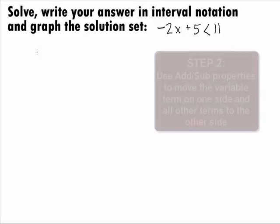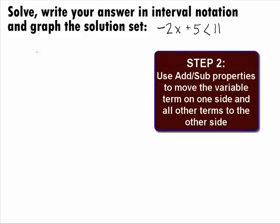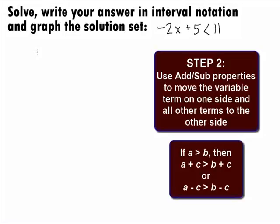In Step 2, we want to use the addition-subtraction properties of inequalities to move the variable term on one side and all other terms to the other side. When we add or subtract the same thing to both sides of an inequality, the inequality does not change.